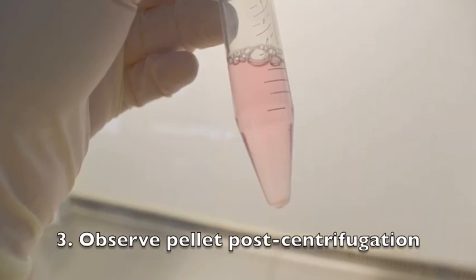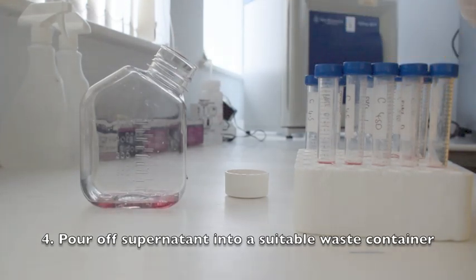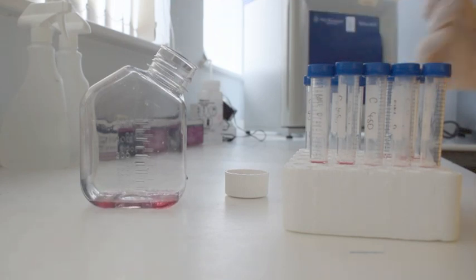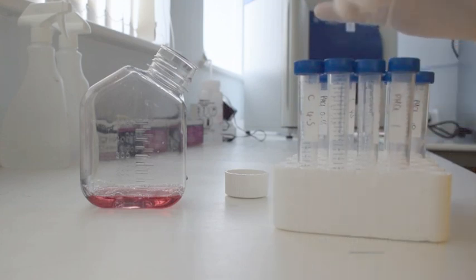Following centrifugation, a cell pellet can be observed. The supernatant is then discarded by pouring. The cell pellet is then resuspended via agitation of the base of the centrifuge tubes.